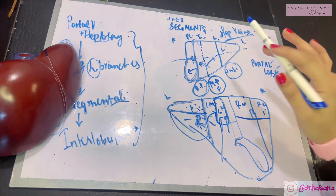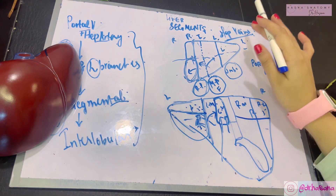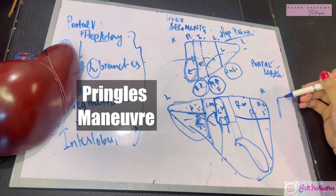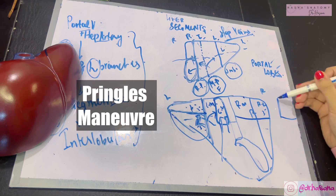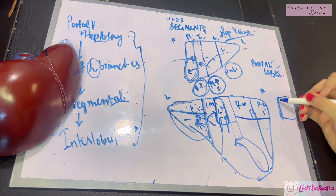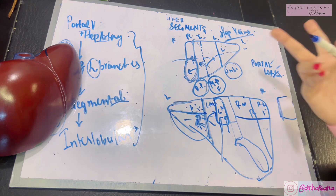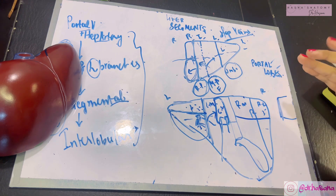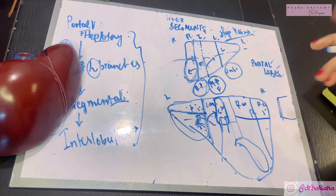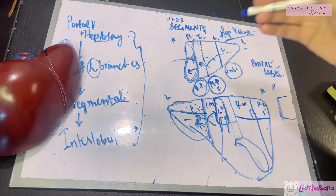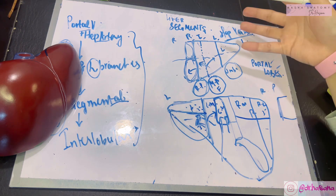Care should be taken as these veins can be the site of massive bleeding. Whenever there is bleeding in the liver, you can perform the Pringle's maneuver — compressing the right free margin of the lesser omentum — because lying in that right free margin are the portal vein and the hepatic artery. When these are compressed, the bleeding stops instantly.